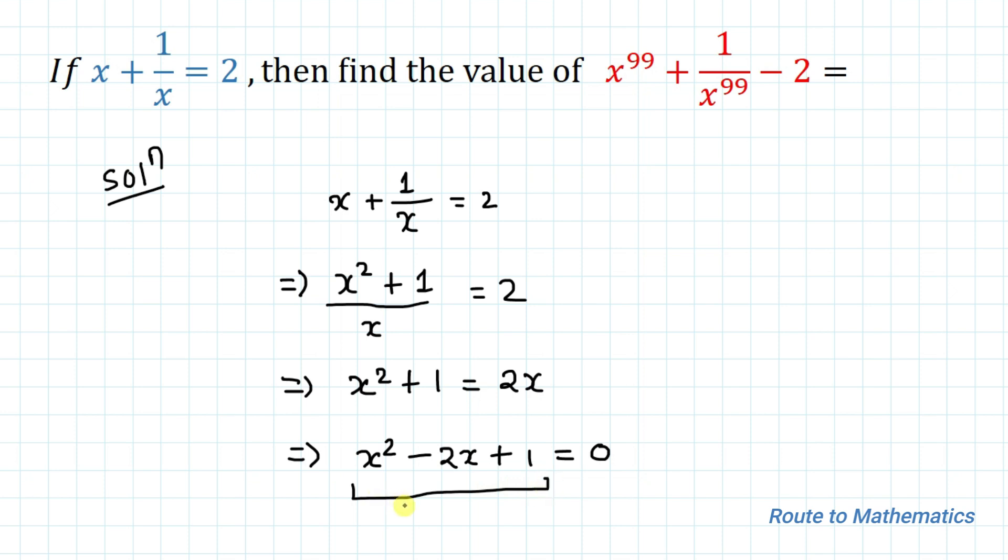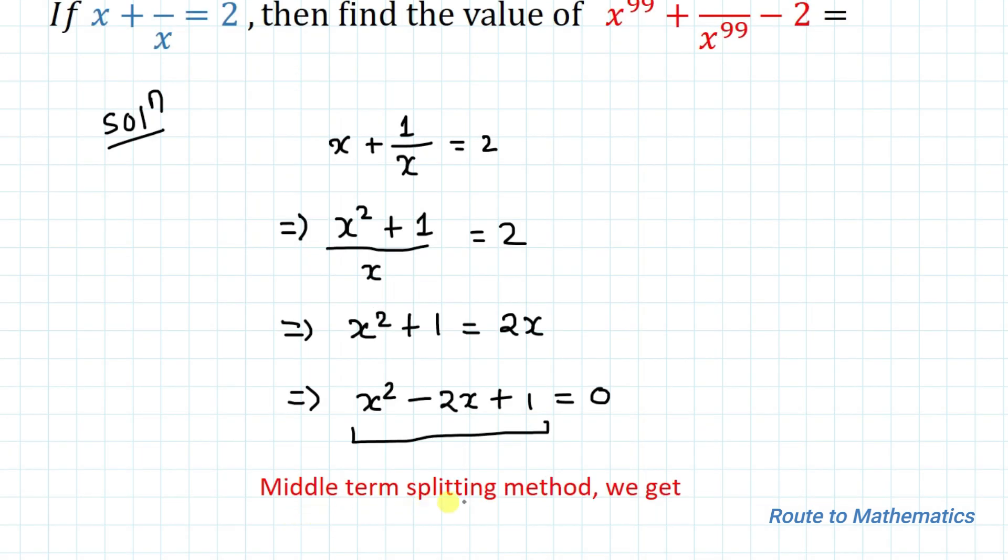To solve this quadratic equation, we will apply the middle term splitting method. This means you split the middle term, which is 2x, using the coefficients of the other two terms. The coefficient of x square is 1 and the coefficient of the constant term is also 1.